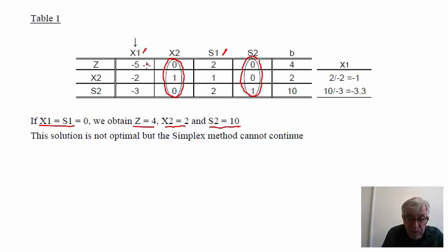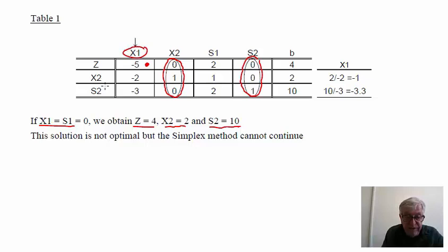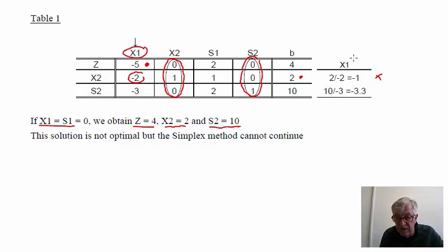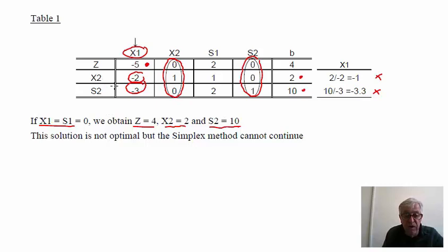This solution is not optimal because we have a negative coefficient in the z row. We need to introduce x1 into the base. To find which variable exits, we divide 2 by minus 2, which gives minus 1 — we cannot extract x2 because x1 would take a negative value. Then we divide 10 by minus 3, which is also a negative number. Since all column coefficients for x1 are negative, we know the solution is not optimal but we are unable to find a new one. In these cases, we are in the presence of an unlimited solution.